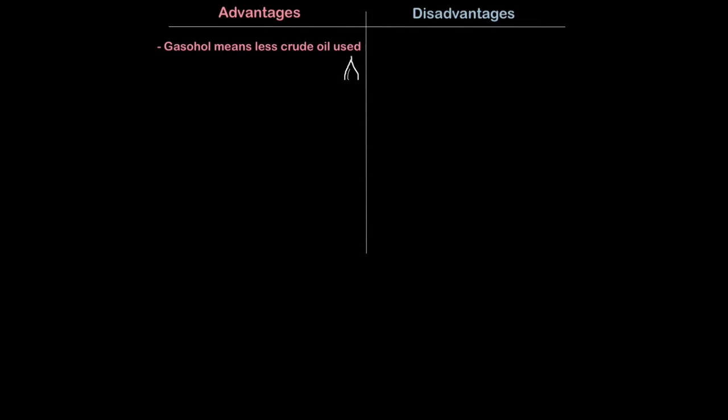One, gasohol means less crude oil is being used. Because now we're mixing it with ethanol, it means we don't have to use as much crude oil to make petrol. Two, again because it involves the growing of plants it's another potential carbon neutral strategy because they take carbon dioxide in through photosynthesis and release it when burnt.